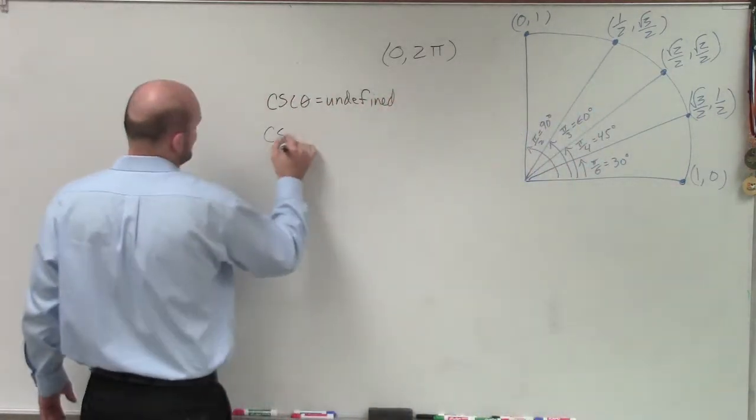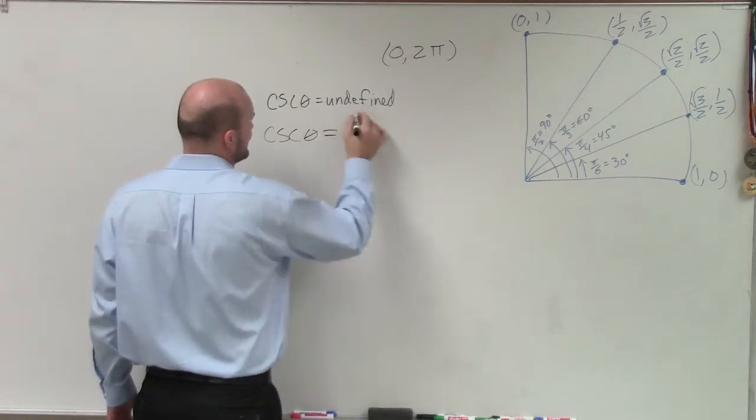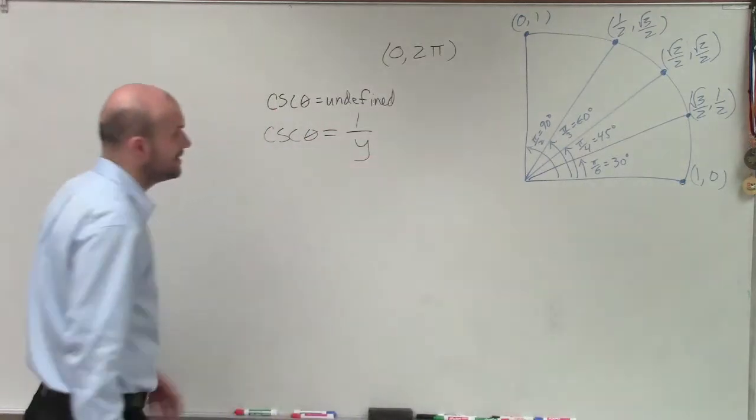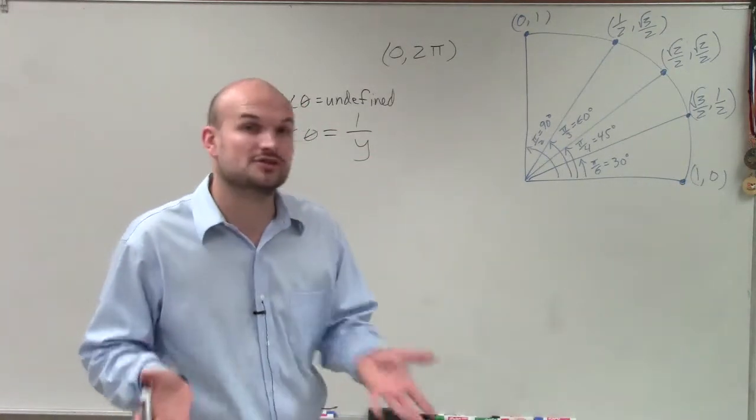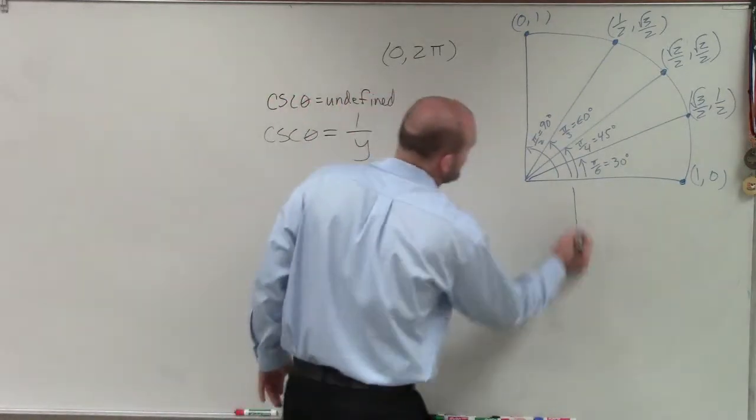We know that the cosecant of theta for any theta is represented as 1 over y. So what we need to do is look on the unit circle and determine when the y coordinate is 0.